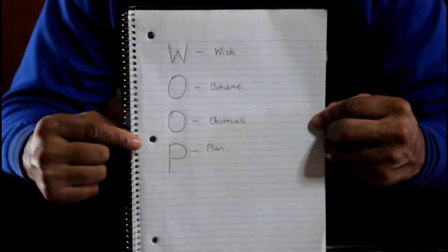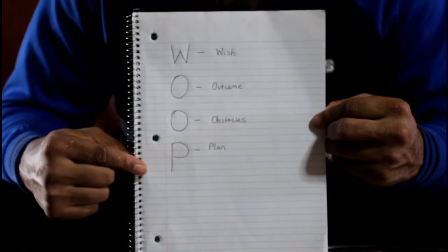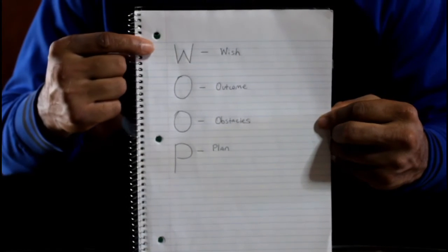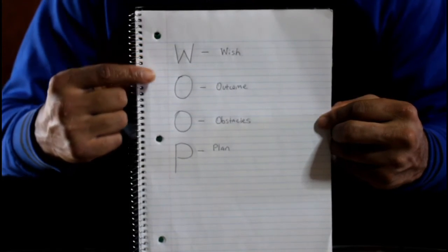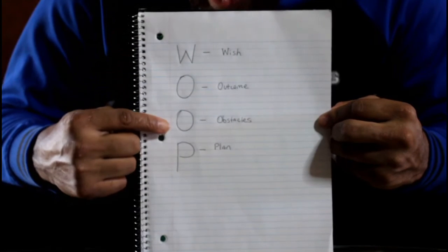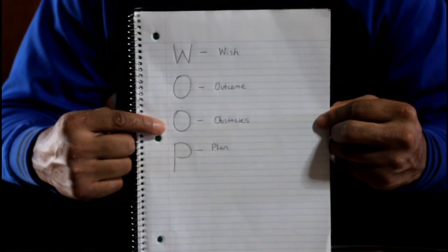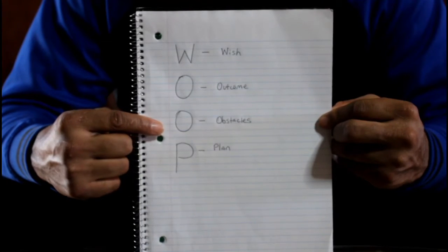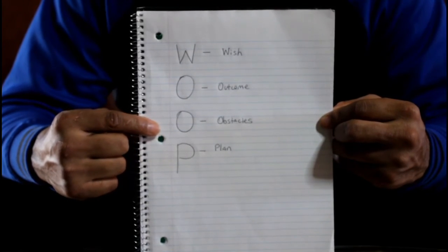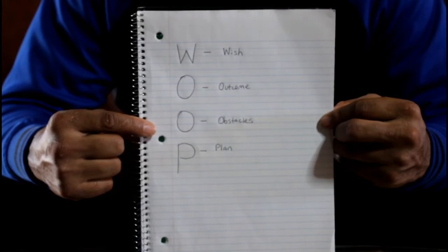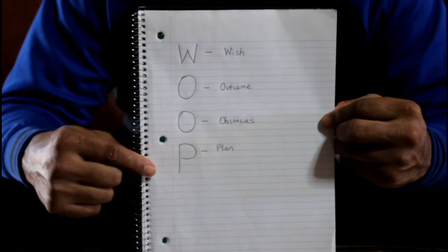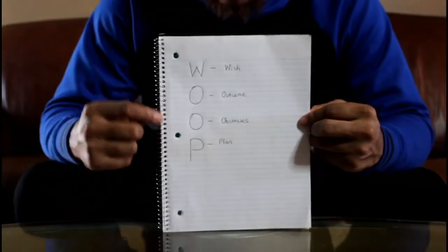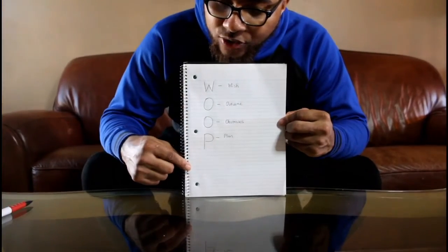Lastly, formulate a plan on how you're going to accomplish this goal and how you're going to overcome these obstacles. Think about the things you can do to overcome the obstacles and not let them outweigh your train of thought in the process of accomplishing this goal. Take a minute to do that.